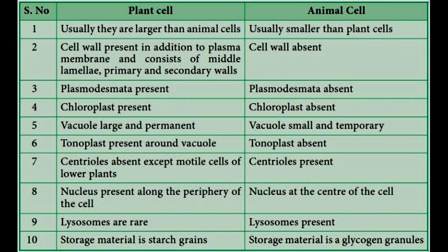In plant cell, tonoplast is present around the vacuole. In animal cell, tonoplast is absent.